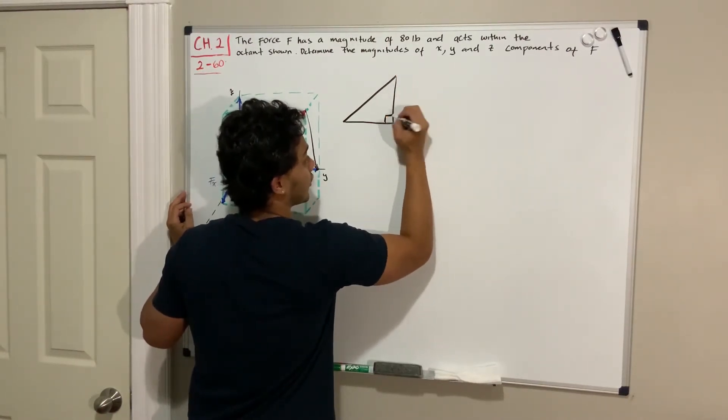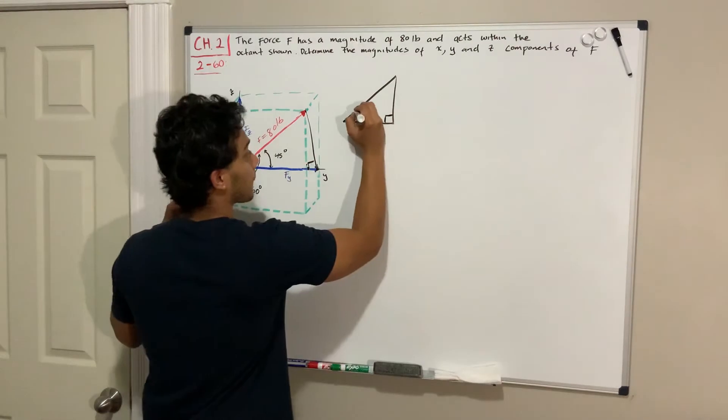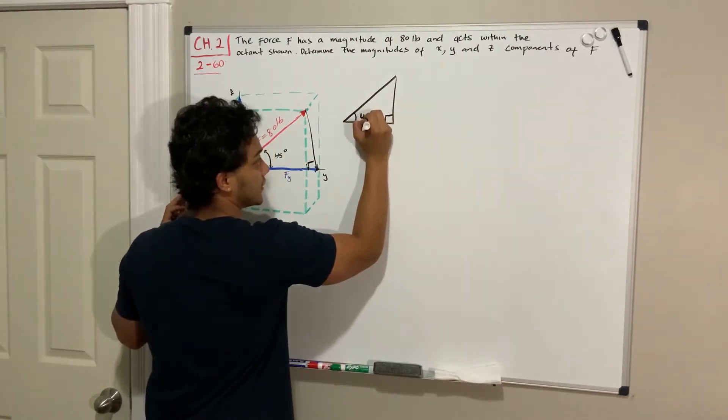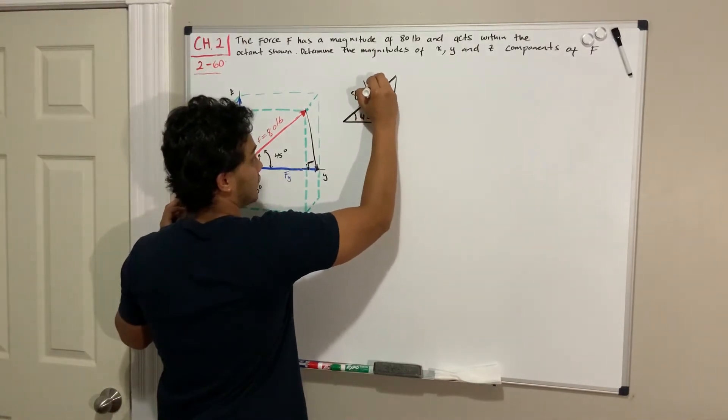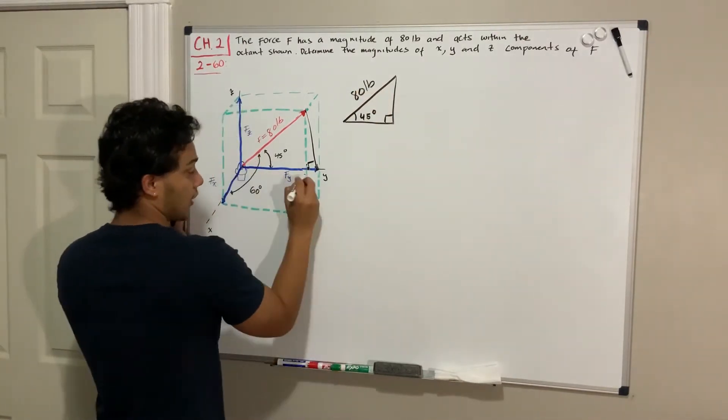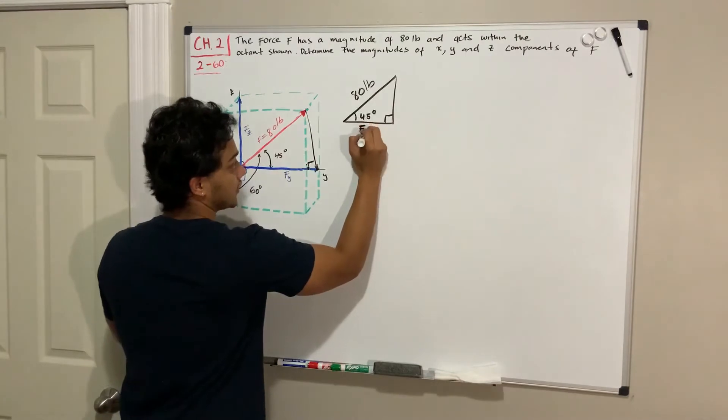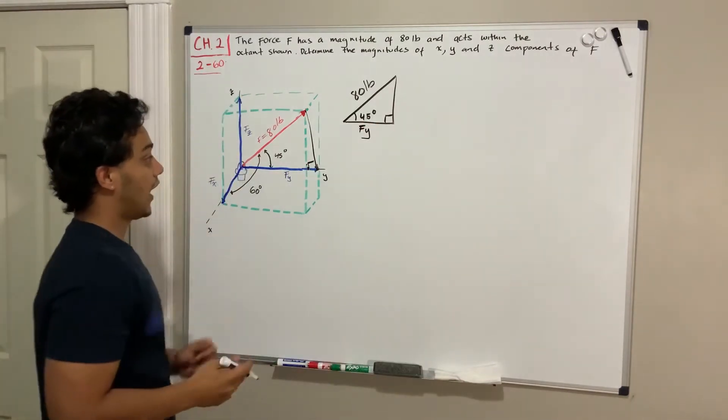We'll have our right triangle over here, our 45 degrees here, we will have our hypotenuse which we know is 80 pounds, and F of Y, which is the adjacent to that angle.